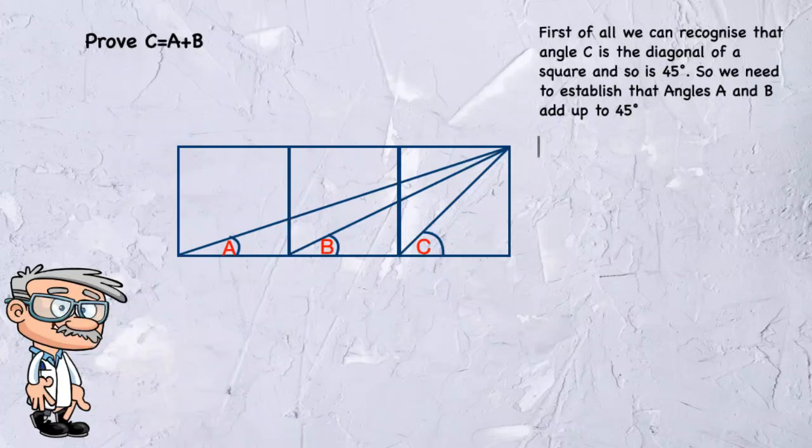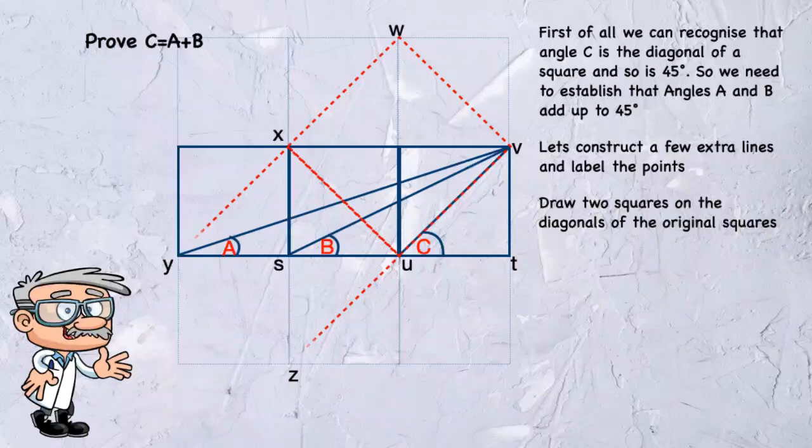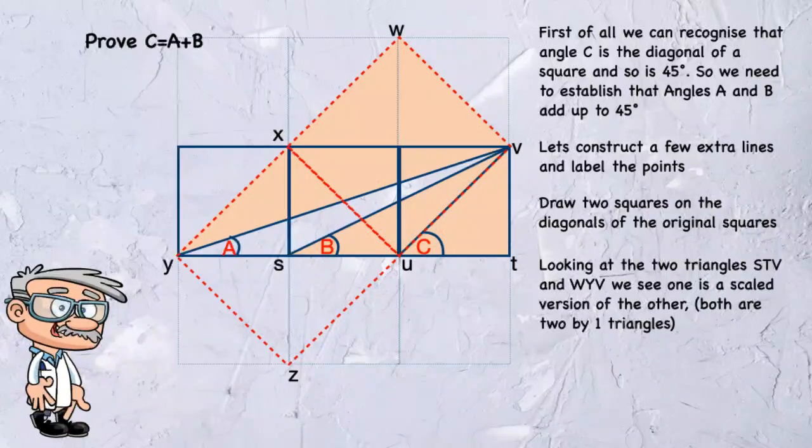Let's construct a few extra lines and label the points. Draw two squares on the diagonals of the original squares. Looking at the two triangles STV and WYV, we see that one is the scaled version of the other. Both are 2 by 1 triangles.